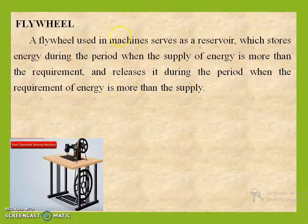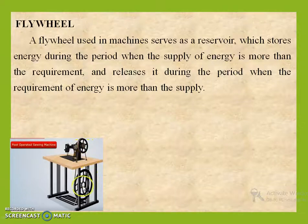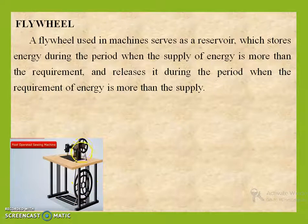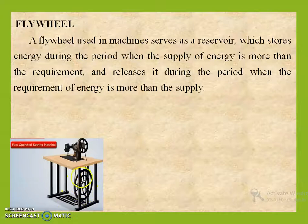For the understanding of this flywheel, we will consider this sewing machine. This is a pedal and this is a larger wheel, and it is connected to the smaller wheel using this belt. So when we apply pressure on this pedal, the larger wheel starts rotating causing the rotational movement of the smaller wheel. And if we stop applying this pressure, then also this larger wheel continues to rotate causing the rotation of the smaller wheel, and after some time it comes to rest.